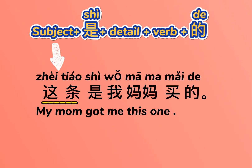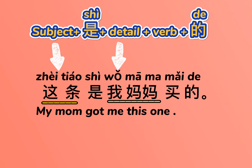这条是我妈妈买的。 这条, 'this one,' is the subject. 是, 我妈妈 is the detail. 买 is the verb, 的.